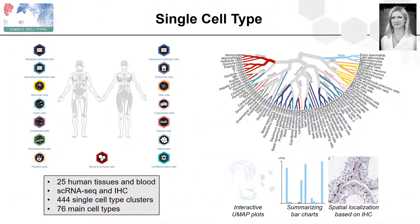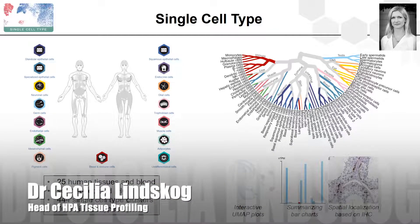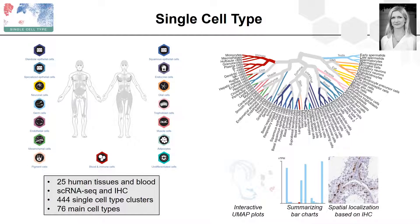The single cell type section was first released in 2020, and this year we have expanded the data set to now include 25 different human tissues and blood, giving an overview of all the major organ systems in the human body. We use a combination of single cell RNA sequencing and immunohistochemistry data to study expression profiles in single cell types. It is possible to explore genes enriched in a specific cell type, presented as interactive UMAP plots and summarizing bar charts. The entire data set covers 444 individual cell type clusters summarized into 76 main cell types.